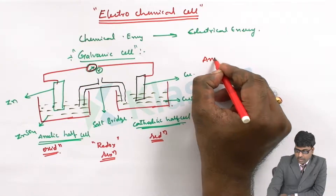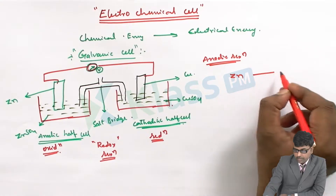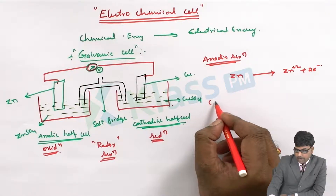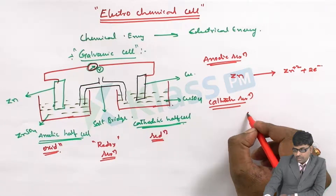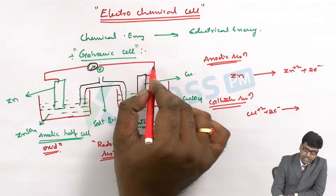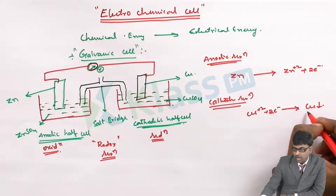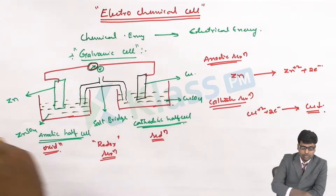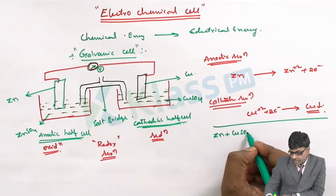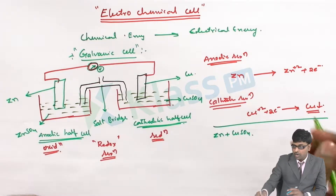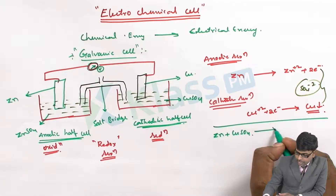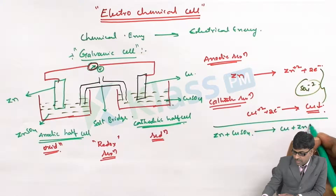The anodic reaction: zinc gets oxidized and gives rise to Zn²⁺ plus 2 electrons. The cathodic reaction: Cu²⁺ present in solution takes 2 electrons coming from zinc through the external circuit and forms copper, which is deposited at the cathode. The overall reaction: zinc plus copper sulfate gives rise to copper plus zinc sulfate, where SO₄²⁻ are the common ions between the two half cells.